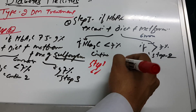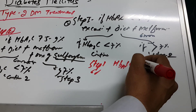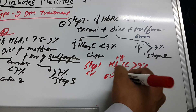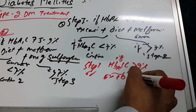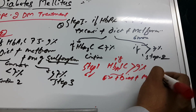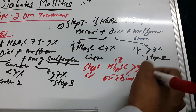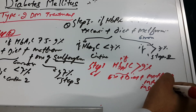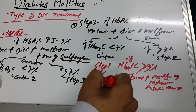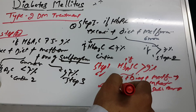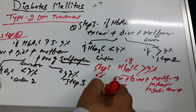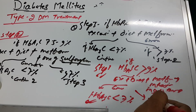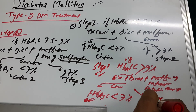Step 3: if HbA1c is more than 9%, we continue exercise and diet control, use metformin, and add intensive insulin therapy for six months. After six months, if HbA1c is less than 7%, we continue the same regimen. If more than 7%, we change the dose and reassess.